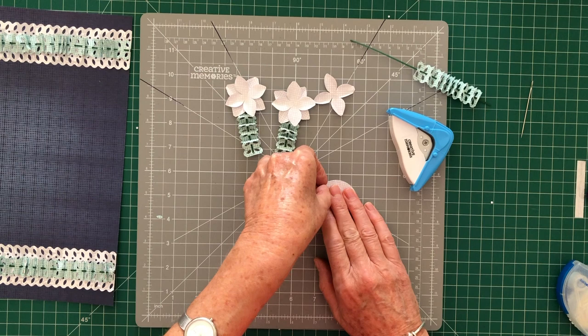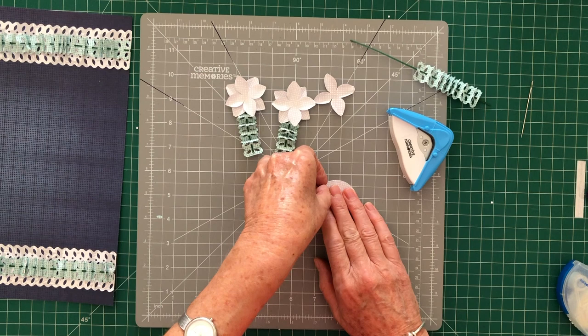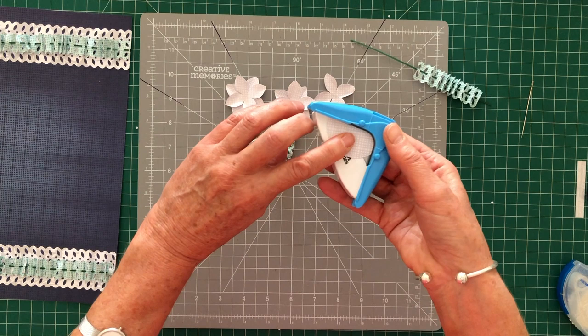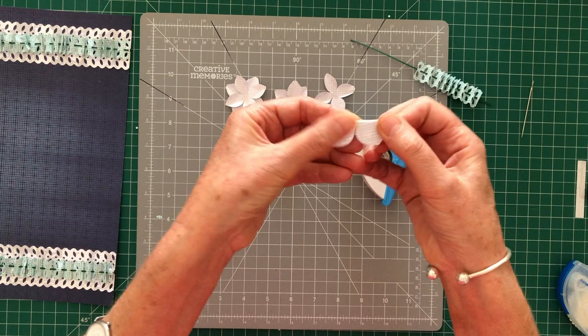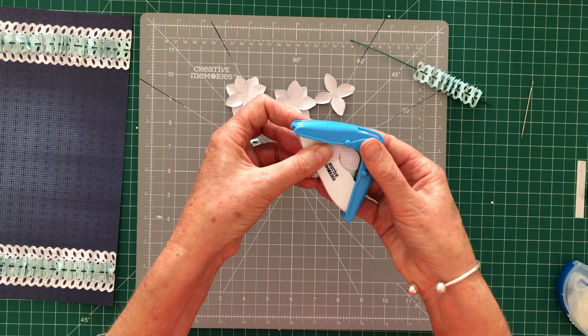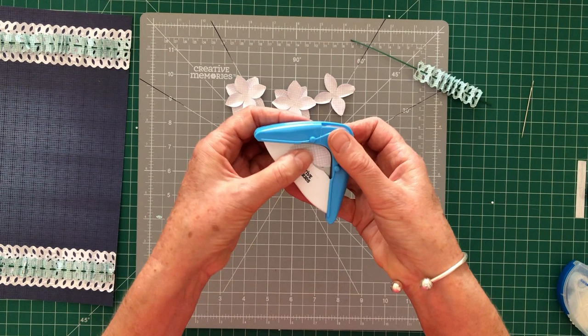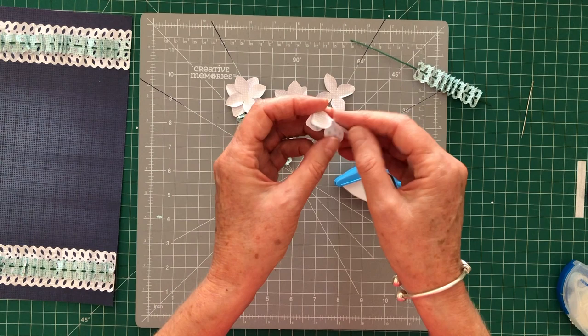So again a circle. Just fold it in half and put it in the corner rounder. Push it in all the way. Punch. Flip it over. In all the way. Punch. Fold it in half again. Pop it in the corner rounder. Punch. Flip it over. Put it in the corner rounder as far as it will go. And then you've got your little petals. So again just give them a little crease.